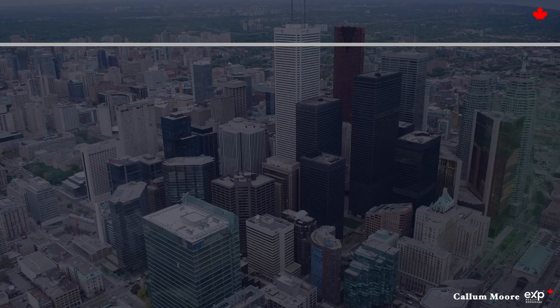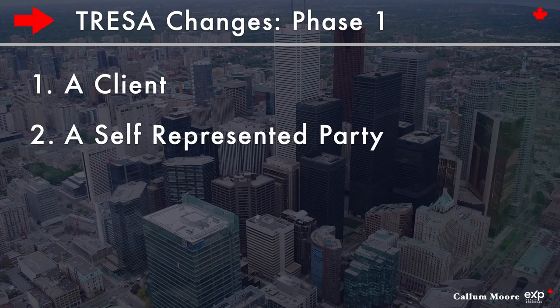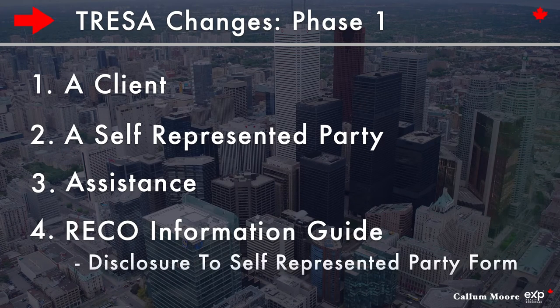The first four things I'm going to break down are: a client, a self-represented party, assistance, and the RICO Information Guide and Disclosure to Self-Represented Party Form. I'll break these four things down and put them into scenarios and examples, because in my opinion this is not only the best way to teach, but the best way to learn.